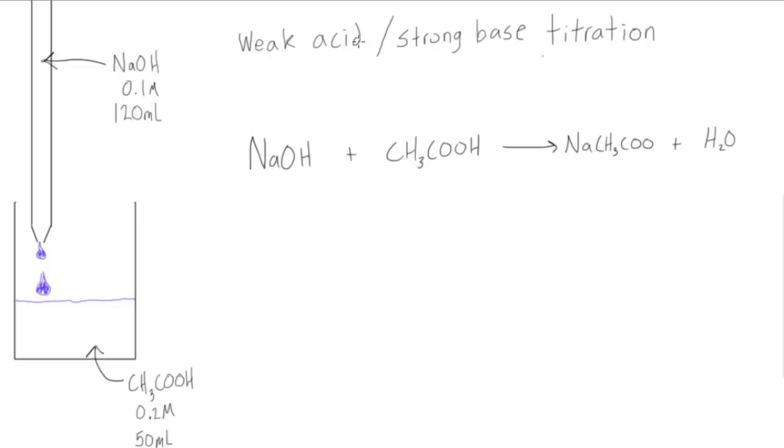This is the last video in our weak acid strong base titration series. What we want to do is find the pH once we've added more NaOH than we needed for the equivalence point and have passed the equivalence point. In that case we're going to say we're adding 120 milliliters, so first of all let's find out how many moles again of each thing we have.